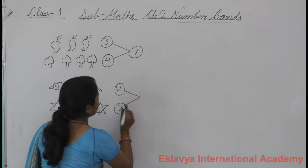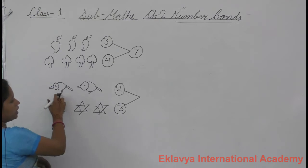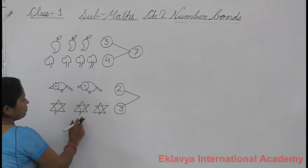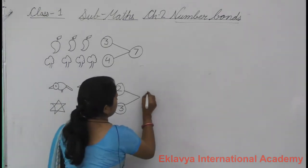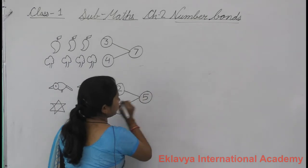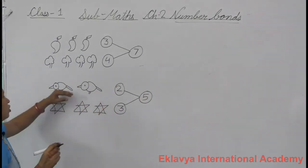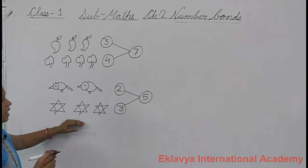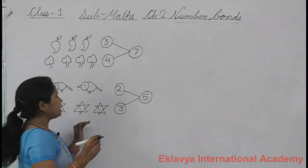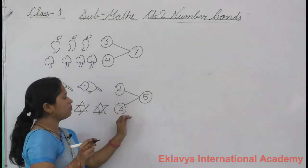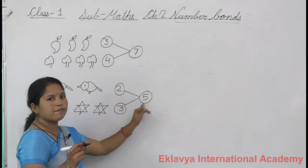And count both together. One, two, three, four, five. Five. Put that number there — five. Two birds, three stars. Two birds, three stars. Two birds, three stars. So both are counted — put five.